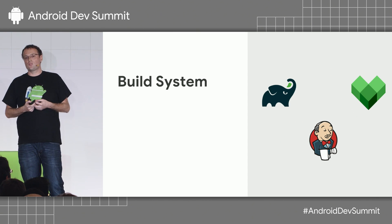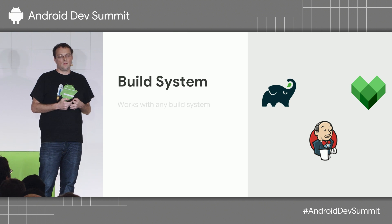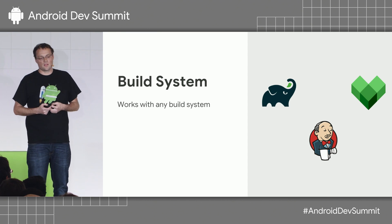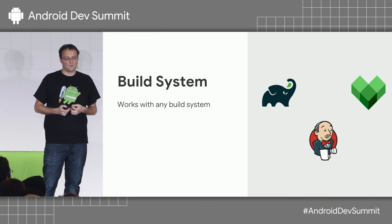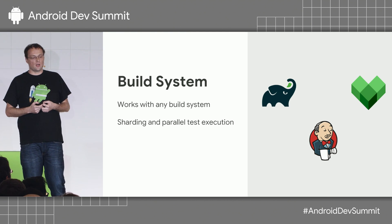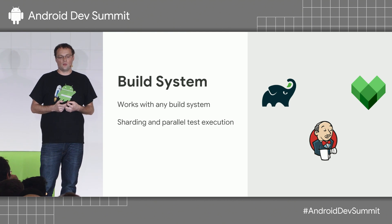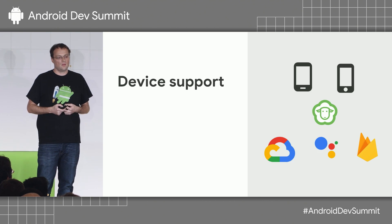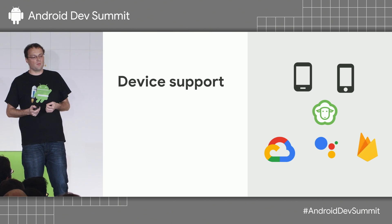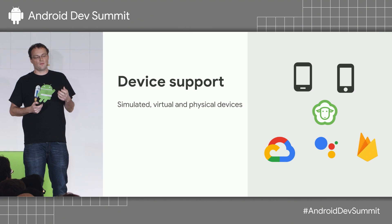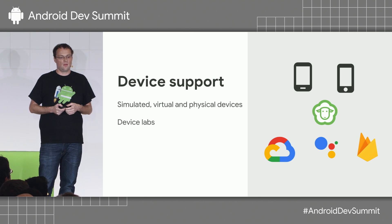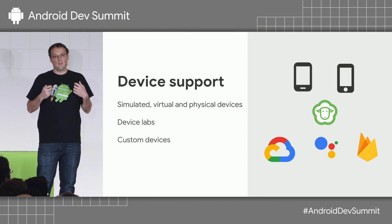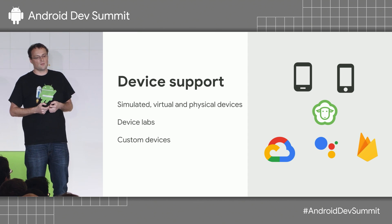Nitrogen is just a standalone tool, so it can be easily integrated into any build system. We're working on integrations for Gradle and Bazel. We're adding sharding and parallel test execution, and continuous integration support will be there from the start. On the device side, we're initially planning to have support for simulated, virtual, and physical devices, as well as device labs such as Firebase Test Lab. You can even add your custom devices if you have custom hardware.